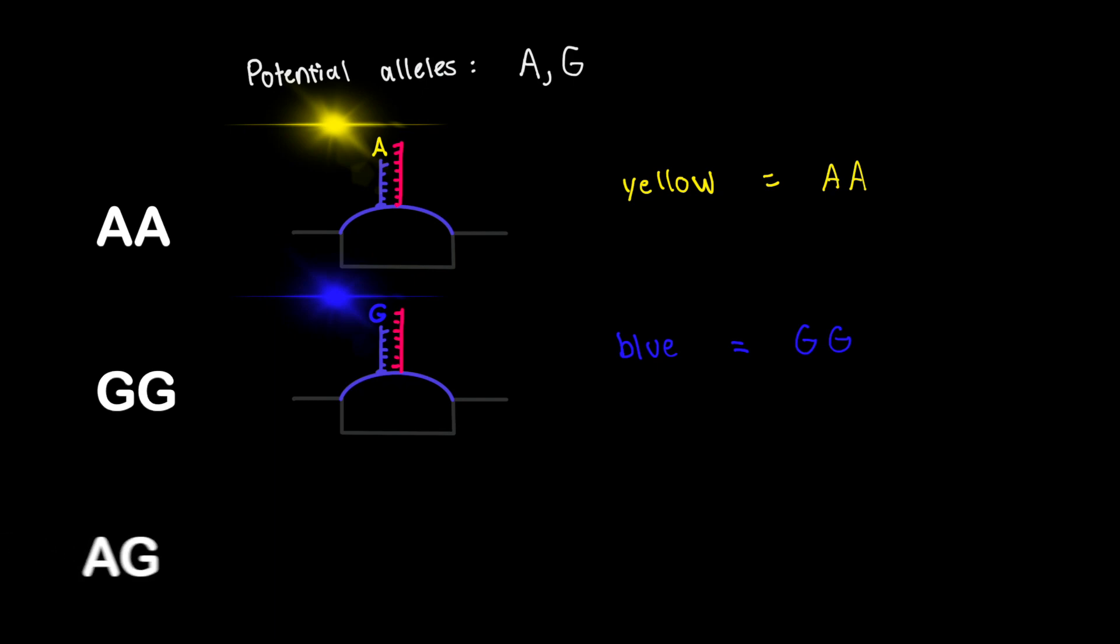The third possibility is that the sample is heterozygous and has a genotype of A-G. In this case, some of the hundreds of oligonucleotide probes would have adenine added, and others would have guanine added. This would happen, of course, because the sample DNA has roughly equal amounts of DNA fragments complementing each.